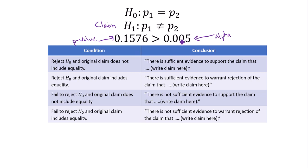Since the p-value is greater than alpha, we fail to reject the null hypothesis. Fail to reject the null hypothesis because the p-value is greater than alpha.